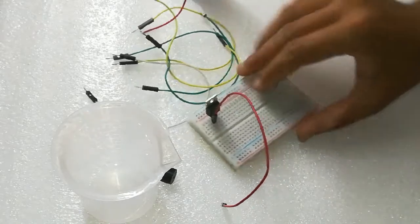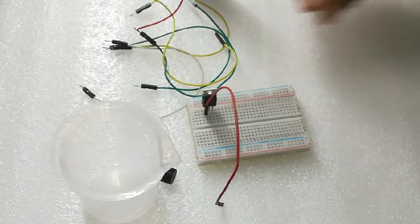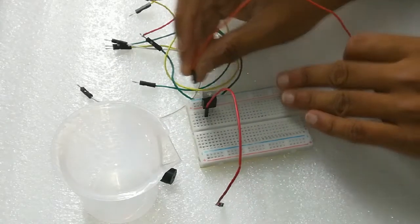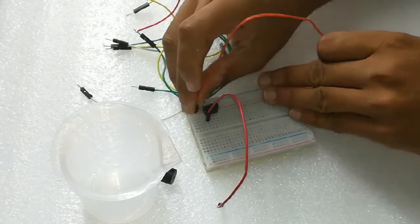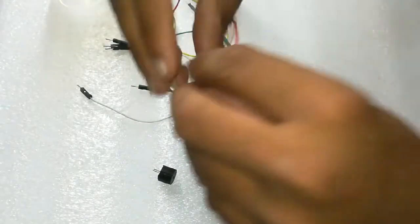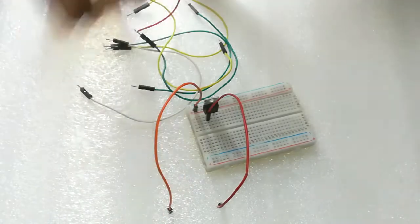Now, we will take another jumper cable and we will connect it to the positive terminal of your battery. These two wires will be going directly to your water tank.